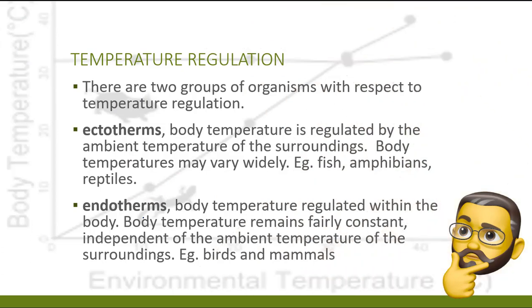When we talk about homeostasis in relation to temperature regulation, we're talking about two main groups of organisms: ectotherms — sometimes called poikilotherms — and endotherms, which often also have the parallel term homeotherms. These terms separate much of the animal kingdom into two groups based on whether body temperature is regulated by the ambient temperature of the surroundings or regulated internally.